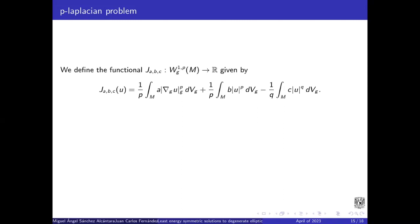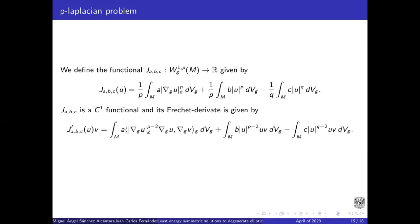We define the functional, this functional. This is a functional that is C^1. And its Fréchet derivative is given by the following equation. So the critical points of the functional are the weak solutions of this problem.